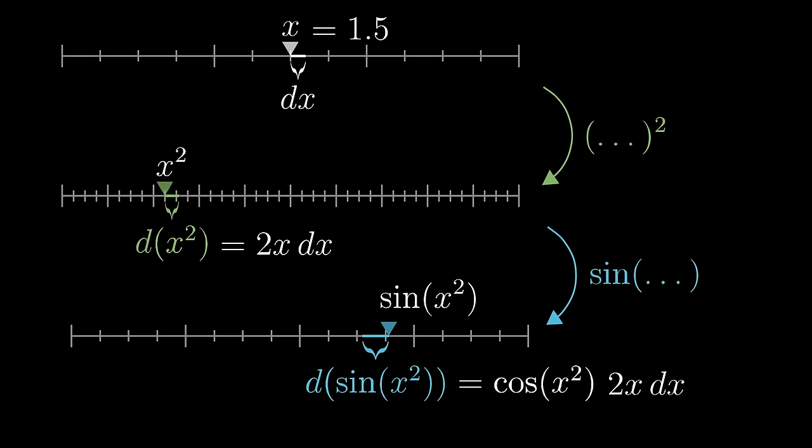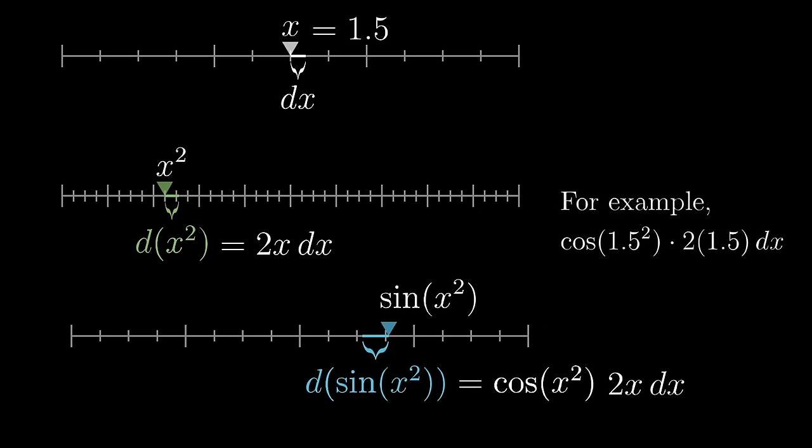And it's always a good habit to remind yourself of what an expression like this actually means. In this case, where we started at x equals 1.5 up top, this whole expression is telling us that the size of the nudge on that third line is going to be about cosine of 1.5 squared times 2 times 1.5 times whatever the size of dx was. It's proportional to the size of dx, and this derivative is giving us that proportionality constant.